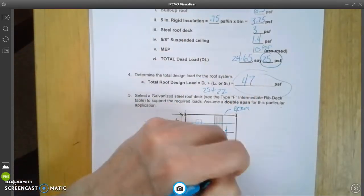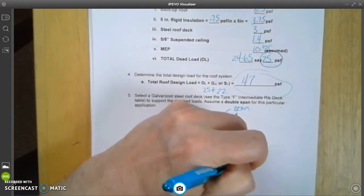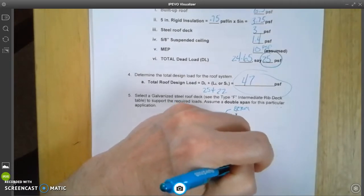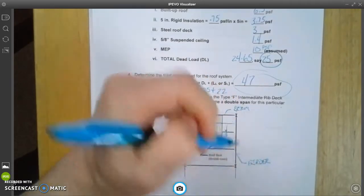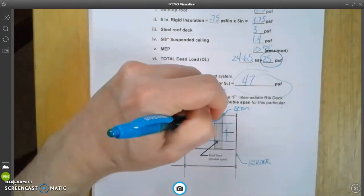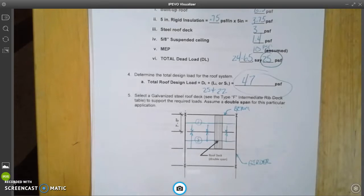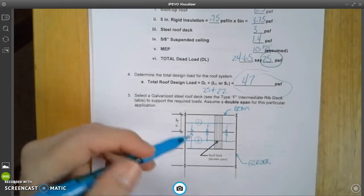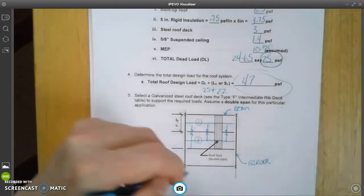The thick heavy lines here, those are girders. Remember, the definition of a girder is it's a structural support that holds another structural support up.